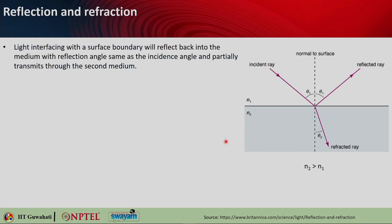Let us look into what is reflection and refraction. Here is an interface between two dielectric media — one has a refractive index of N1, another has refractive index N2. The incident ray is a plane electromagnetic wave traveling in medium N1 that hits this interface. As soon as there is an interface where there is refractive index mismatch, or impedance mismatch, some portion of the incident ray will be reflected back in the same medium.